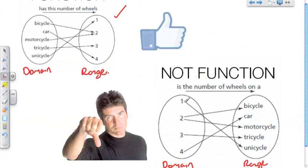In this case, it is not true that each element in the domain is associated with the range, and the one that doesn't follow that rule is the two right here. Two is associated with bicycle and motorcycle, and that's enough to make this a non-function relation.